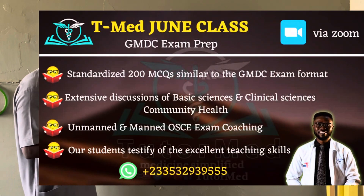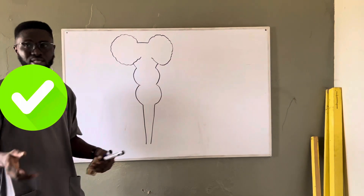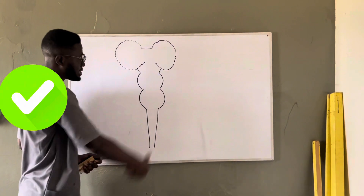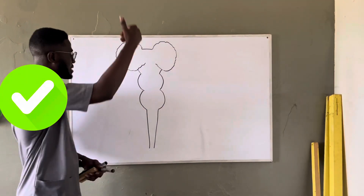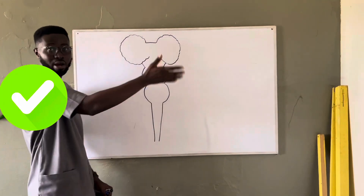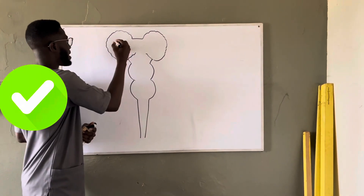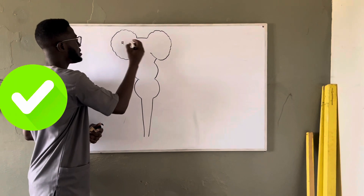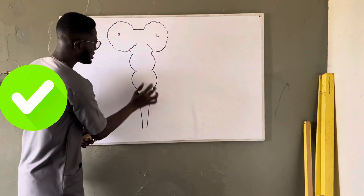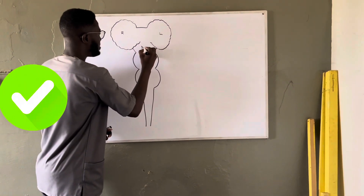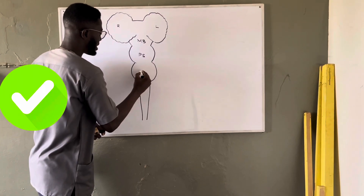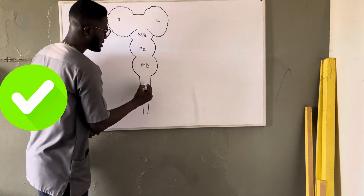I've just drawn a schematic diagram of how the central nervous system looks when you cut it in a coronal section. You have the brain — the two cerebral hemispheres: the right cerebrum and the left cerebrum. Then this is the brainstem: you have the midbrain, the pons, and then the medulla. And then of course this is the spinal cord.